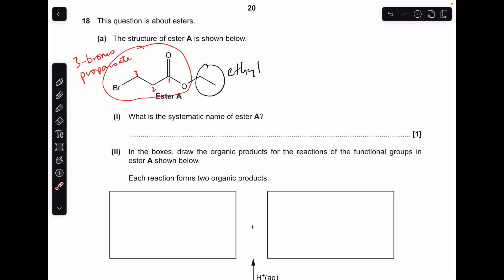Okay, we'll make a start. We've got to give the systematic name for Ester A. You can see I've circled the two parts of the ester. We've got this part here, that's an ethyl group. And this red part here, this is a 3-bromopropanoate group. It's obviously propanoate because it's got three carbons. Carbon 1 is the functional group carbon, so that bromine is on carbon 3. So that means its systematic name is ethyl 3-bromopropanoate.